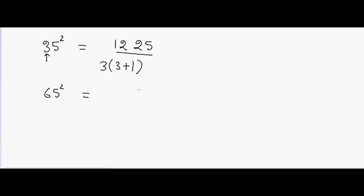Another example: if I have 65 squared, I have to write 25 at the end, and then take 6 and multiply 6 by 6 plus 1, that will be equal to 7. 7 into 6 is 42, so the answer is 4225.